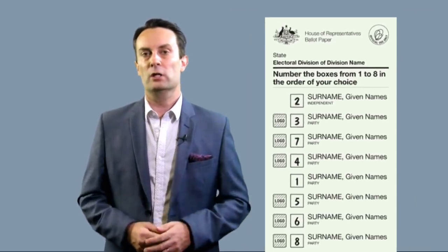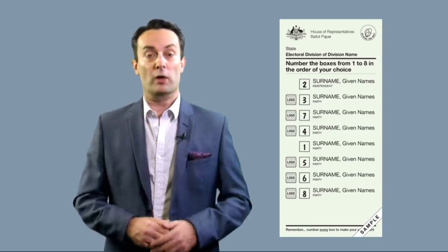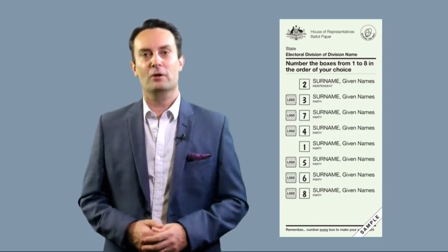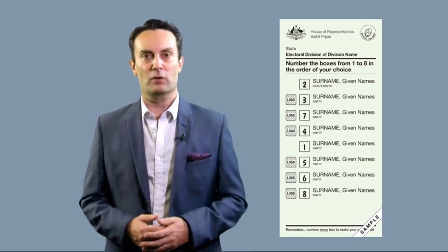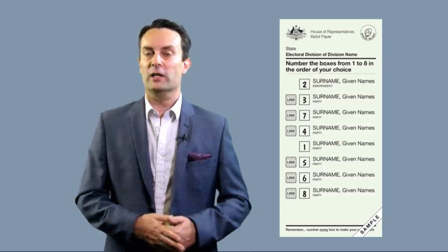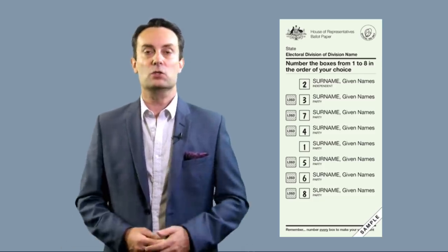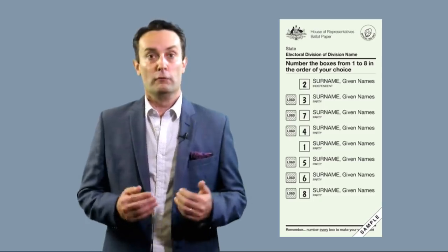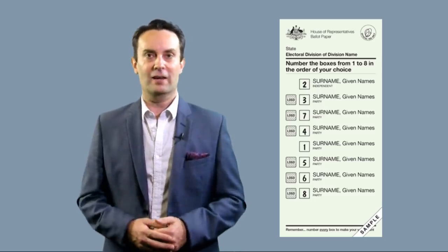It is compulsory to number every box with a 1 for your favorite candidate, a 2 for your second favorite candidate, a 3 for your third favorite candidate and so on down your list until you put the highest number for your least preferred candidate last.